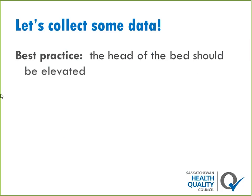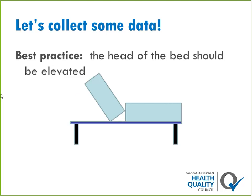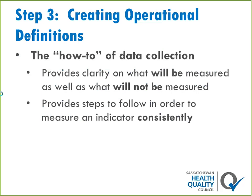Going out to audit the number of beds elevated, you see one bed that's clearly not elevated — put an X through that one. Then you see beds that are ambiguously angled. Is that elevated? Your colleague might consider something totally different. Suddenly our data is not very useful. That's why we need step three: creating an operational definition. It's the how-to of data collection — it provides clarity on what we're going to measure and what we will not be measuring. In our example, it would specify that an elevated bed is between 25 and 45 degrees, so we know exactly what we're measuring.